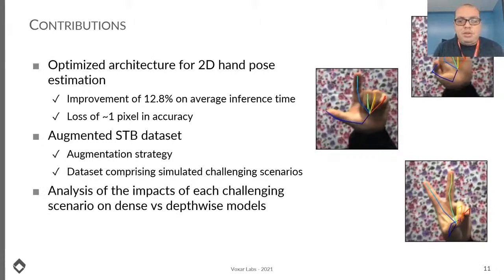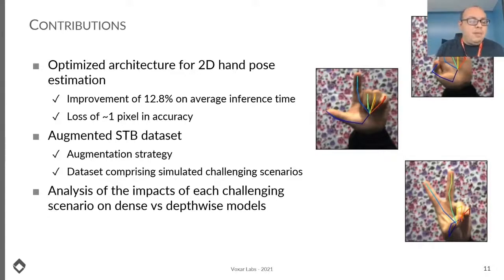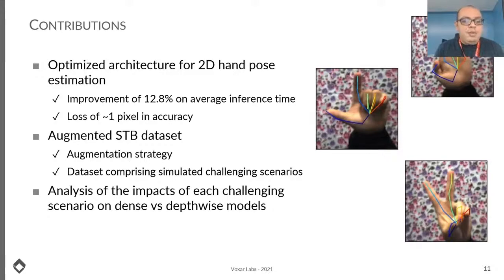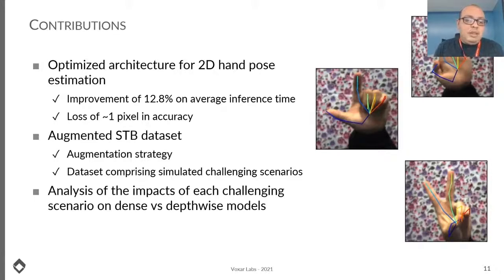In this work, we explore the usage of depth-wise separable convolutions for 2D keypoints detection in hand pose estimation, focusing on challenging scenarios. Our main contributions are: an optimized architecture for 2D hand pose estimation with an improvement of 12.8% on average for inference time keeping accuracy loss under 1 pixel; an augmented version of the stereo benchmark dataset with simulated challenging scenarios; and an analysis of the impacts of each challenging scenario on dense versus depthwise models.